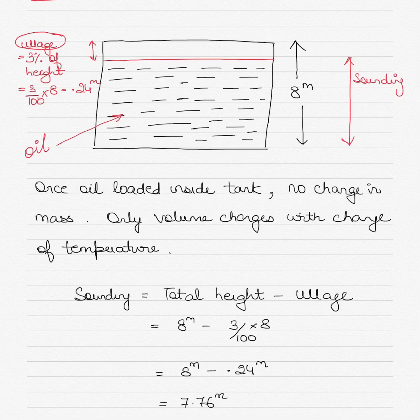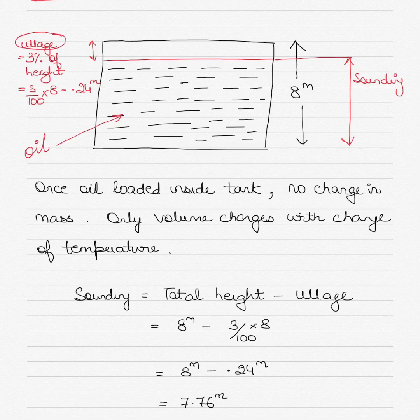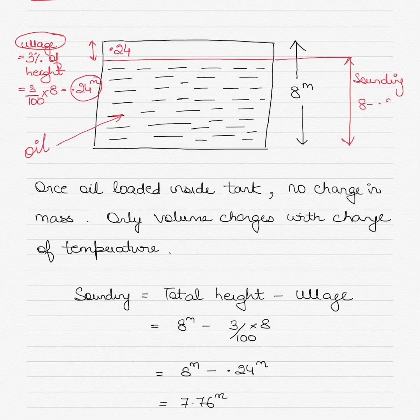The sounding is the depth to which the oil has been filled, and the ullage is the height of the free space above it. If 3% of the height is to be left free, that is 3/100 multiplied by 8, which equals 0.24 meter. So your ullage is 0.24 meter, and your sounding is 8 minus 0.24, which equals 7.76 meters.